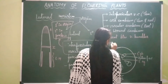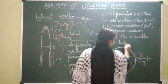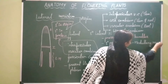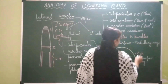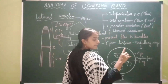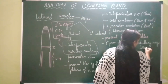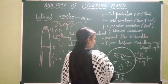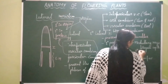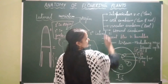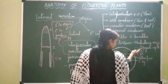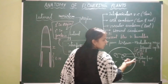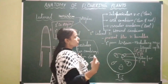Between the vascular bundles, primary permanent tissues called medullary rays are present. These medullary rays undergo de-differentiation — that is, regaining the capacity of cell division — and get de-differentiated into secondary meristem, which is the interfascicular vascular cambium. So interfascicular vascular cambium is formed from primary permanent tissue, medullary rays, by the process of de-differentiation.